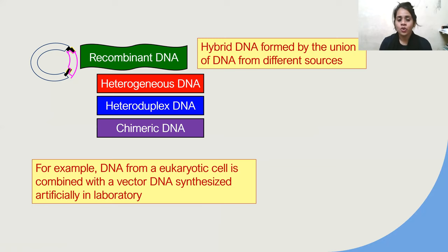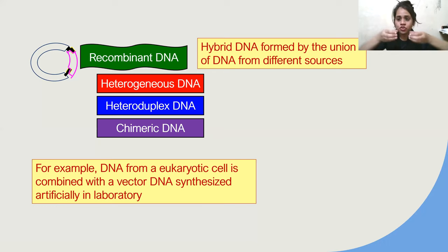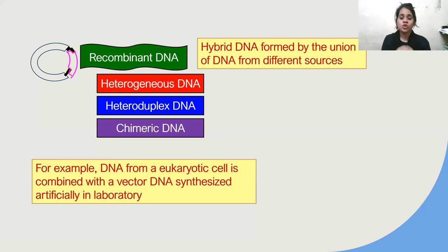Let us take an example. DNA from a eukaryotic cell is combined with a vector DNA synthesized artificially in a laboratory. So here we are combining two DNAs: one is the DNA taken from the eukaryotic cell, and the other is synthesized in an artificial laboratory. When these two DNAs are mixed, they form a new DNA called recombinant DNA, or heterogeneous, heteroduplex, or chimeric DNA.